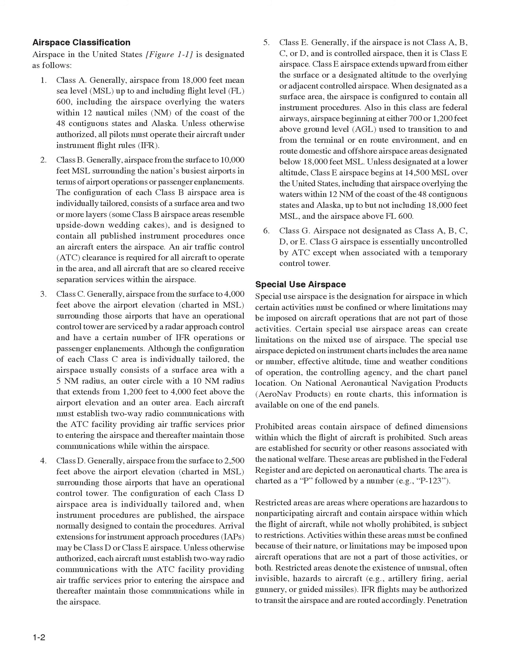Class C: generally airspace from the surface to 4,000 feet above the airport elevation, charted in MSL, surrounding those airports that have an operational control tower, are serviced by a radar approach control, and have a certain number of IFR operations or passenger enplanements. Although the configuration of each Class C area is individually tailored, the airspace usually consists of a surface area with a 5 nm radius, an outer circle with a 10 nm radius that extends from 1,200 feet to 4,000 feet above the airport elevation, and an outer area. Each aircraft must establish two-way radio communications with the ATC facility prior to entering the airspace, and thereafter maintain those communications while within the airspace.